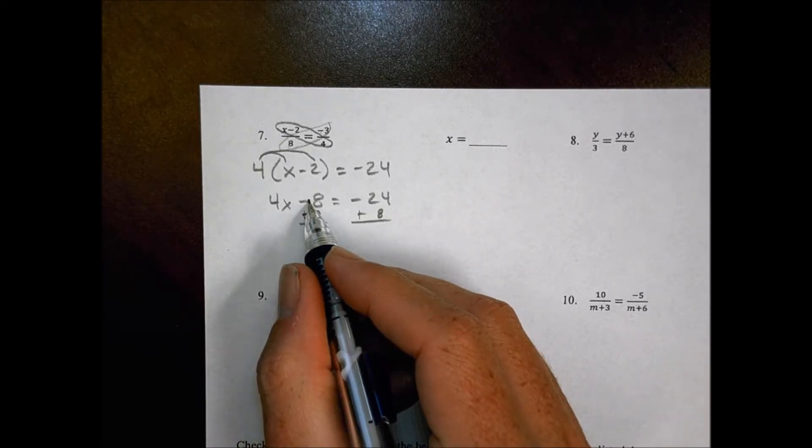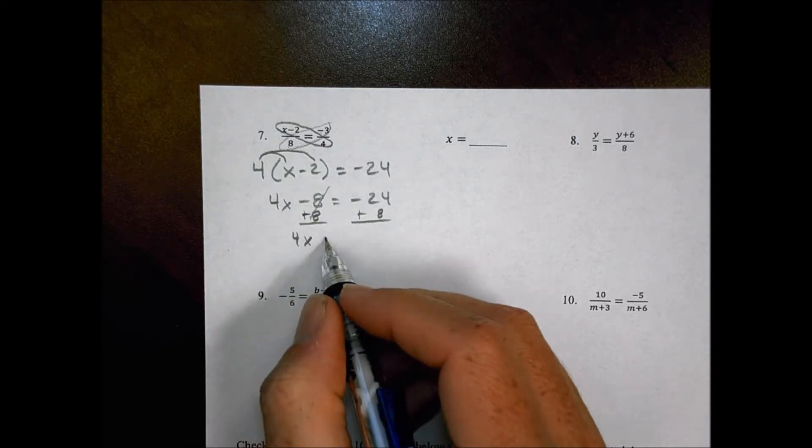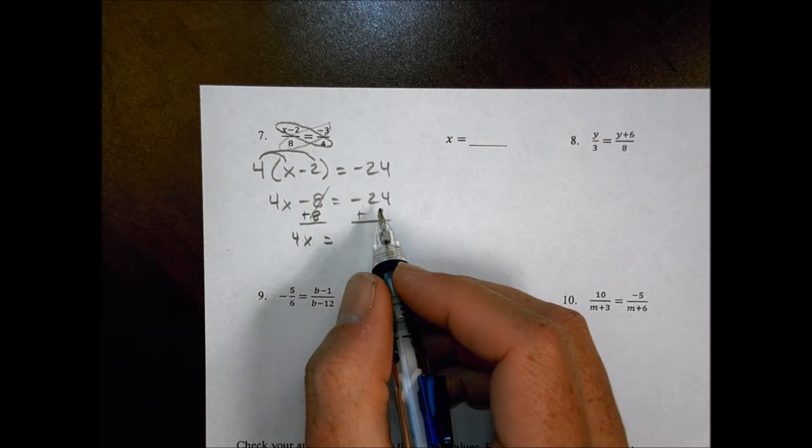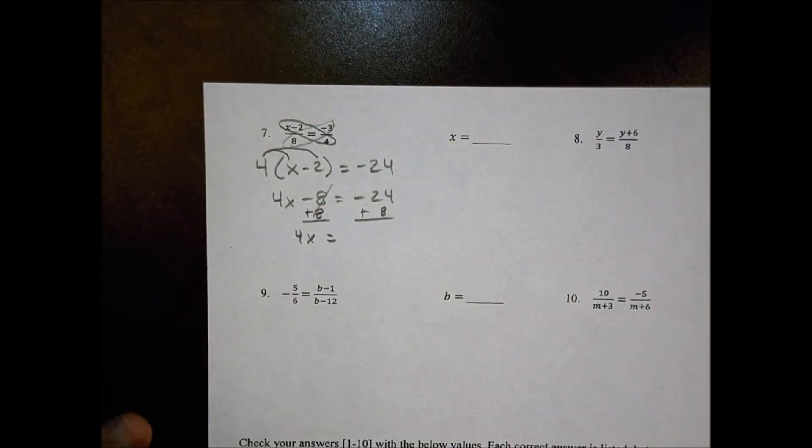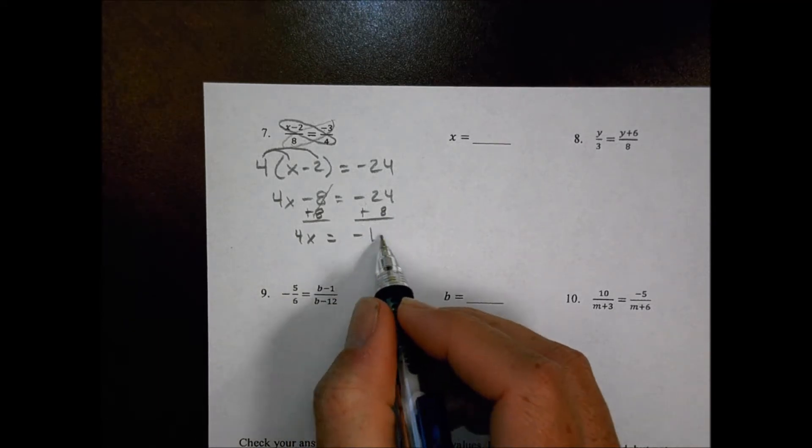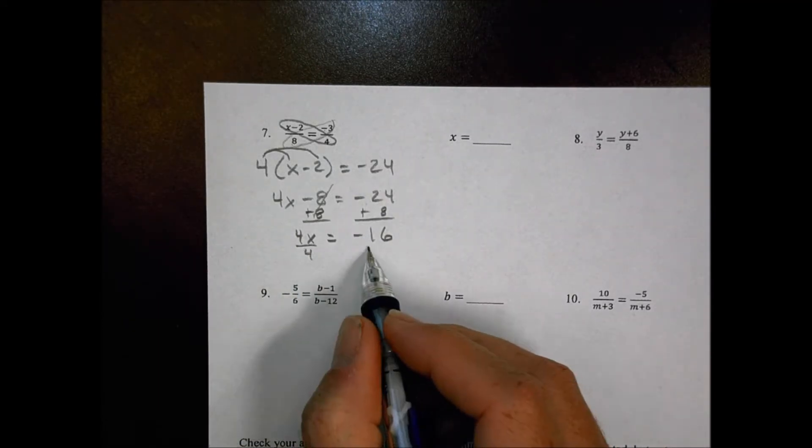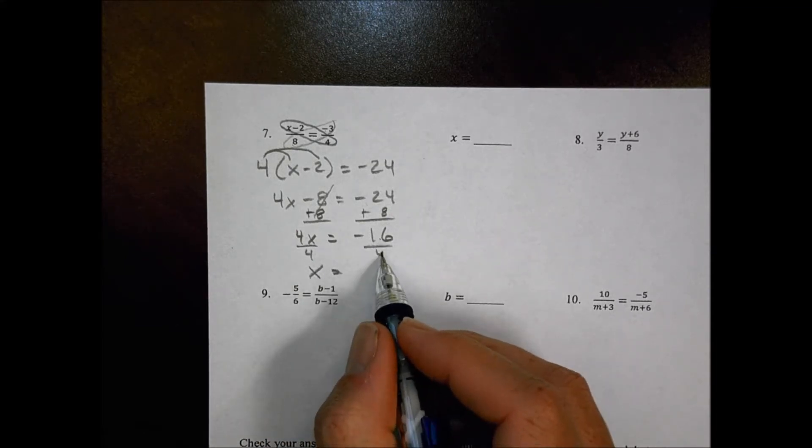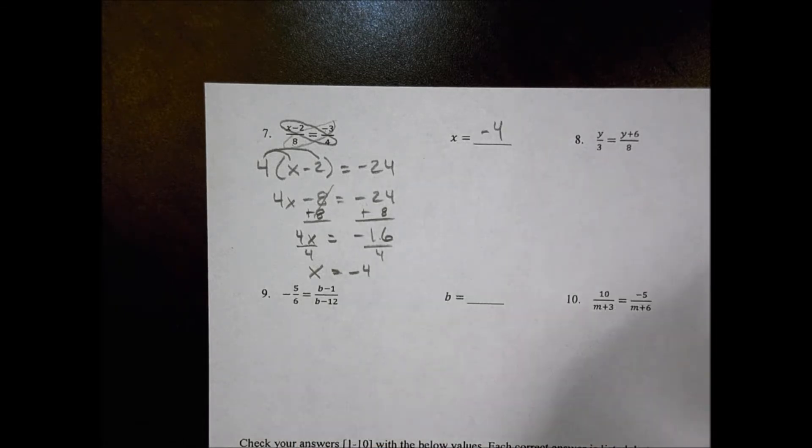So we do the opposite. Instead of minus 8, we add 8 to make that go away. So 4x is what I'm left with over here, is equal to negative 24 plus 8. Negative 24 plus 8 is like doing 24 minus 8 and keeping it negative, so we have a negative 16. So then I divide both sides by 4 to get x equals negative 16 divided by 4 is a negative 4. And that becomes my answer for number 7.